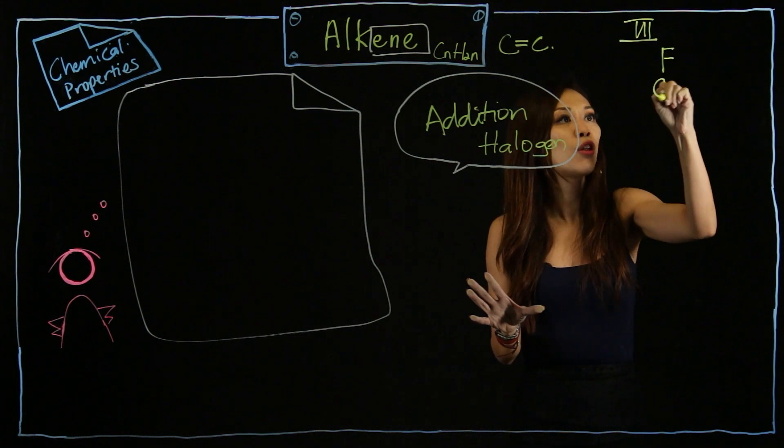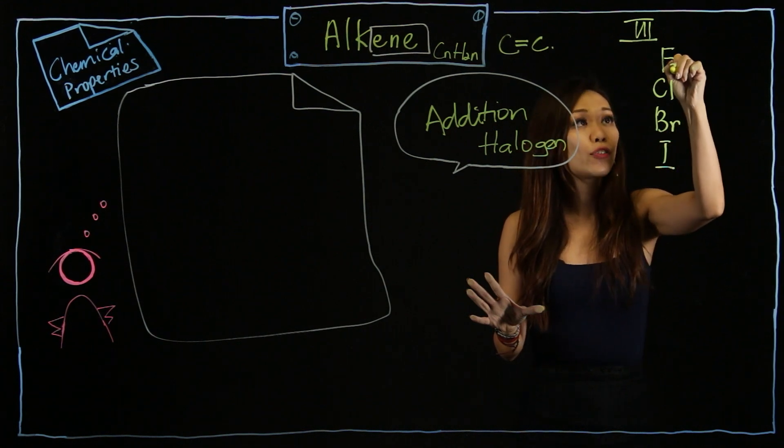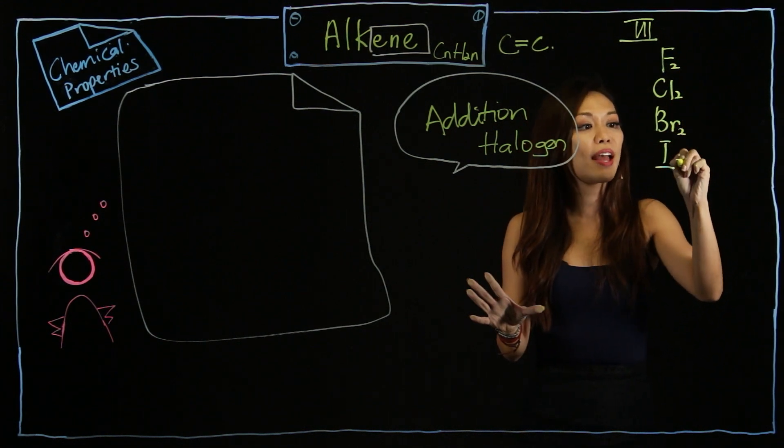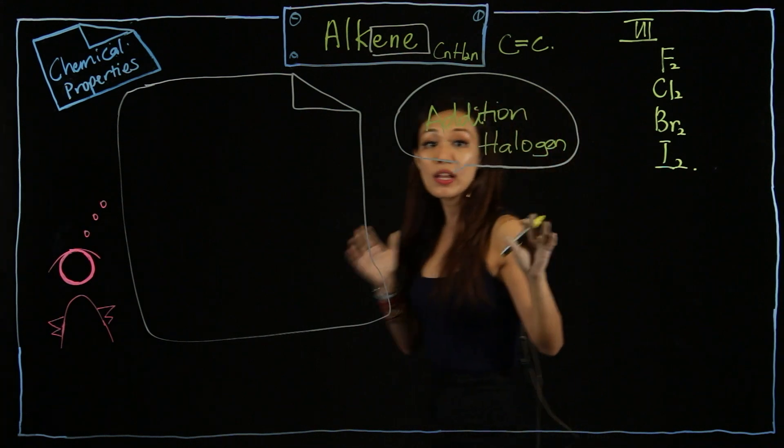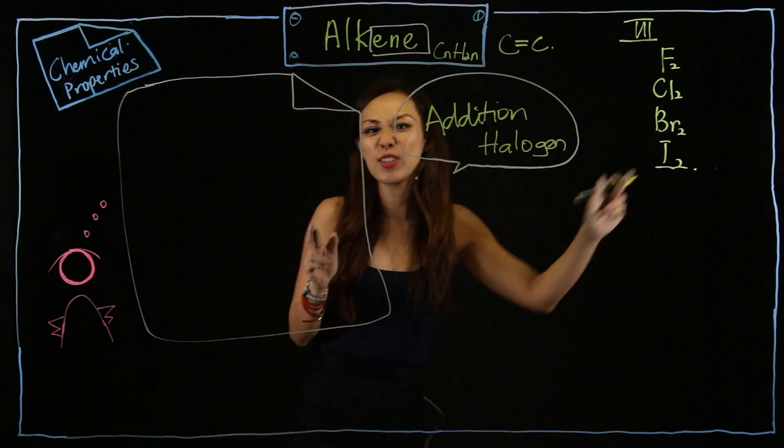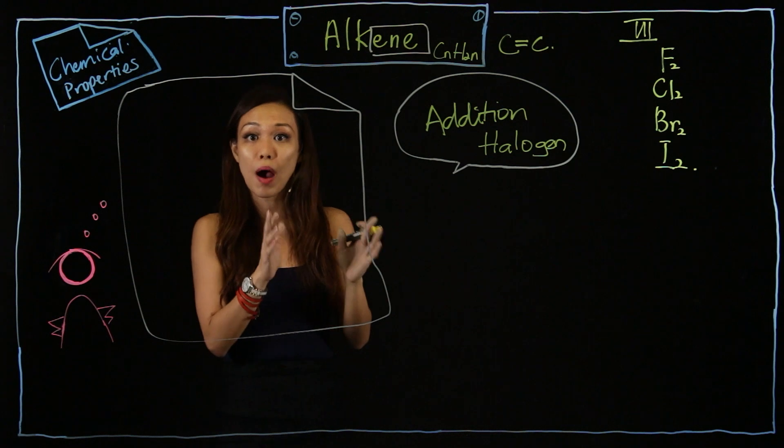Now, you still remember halogen is from which group of the periodic table? Yes, you are right. Group 7. Brilliant answer. Now, we have fluorine, chlorine, bromine, and iodine. F2, Cl2, Br2, and I2. For this part, I'm going to choose Br2, and I'm going to explain to you in a short while why.